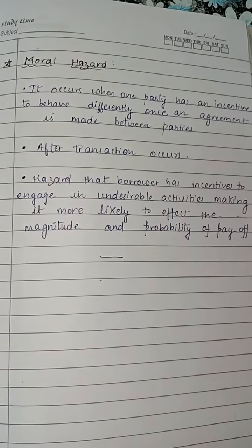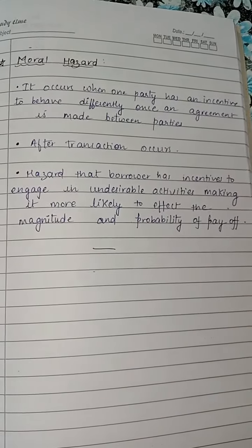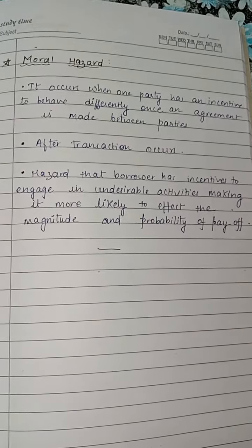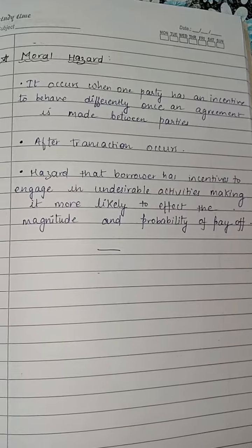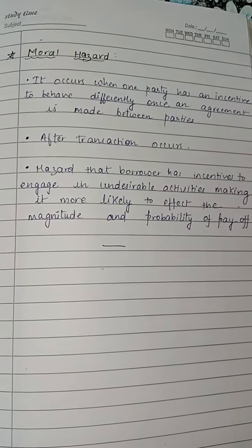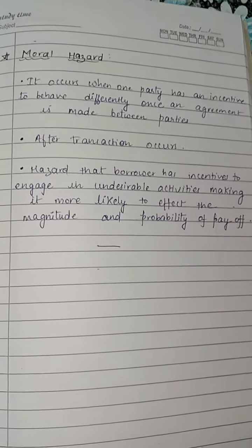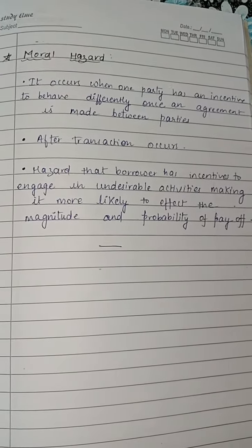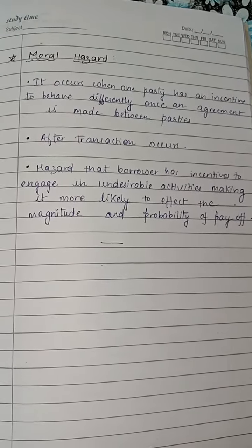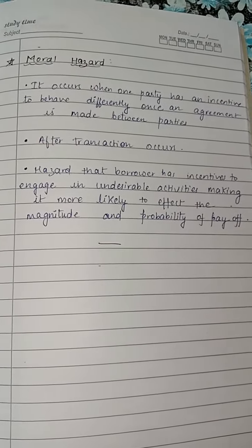So this was about adverse selection and moral hazard, which are the types of asymmetric information. If you liked the video, please like and subscribe. Thank you.